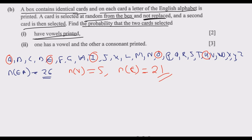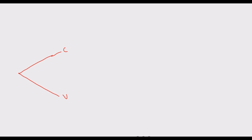We will present this information on a tree diagram. We start from the first selection — there are two possibilities: we can either select a vowel or a consonant. There are 5 vowels out of 26 letters, so there is a 5 out of 26 chance of getting a vowel. There are 21 consonants, so a 21 out of 26 chance of getting a consonant.